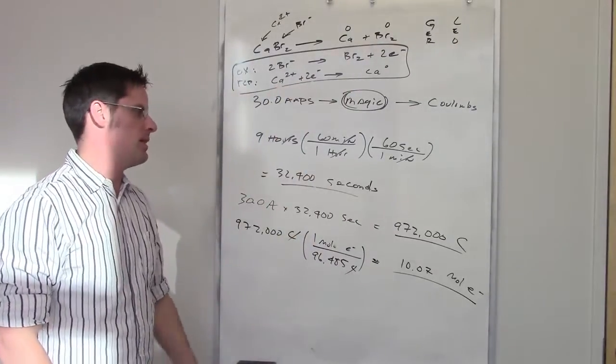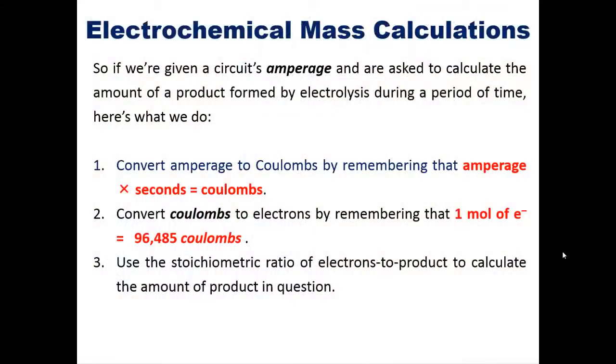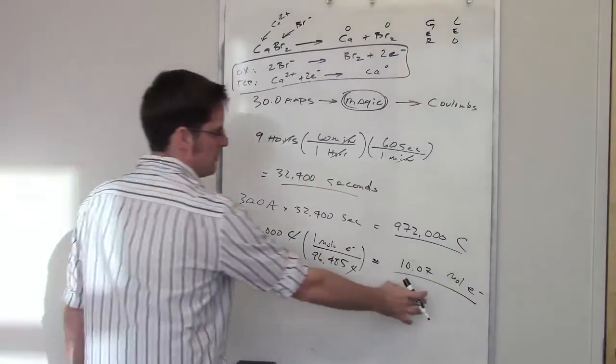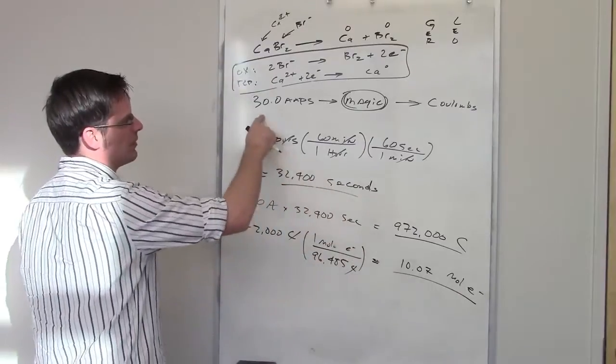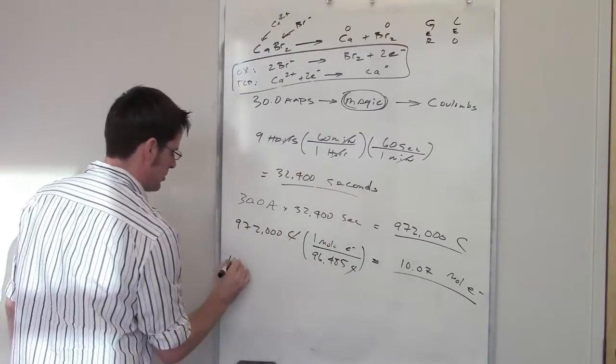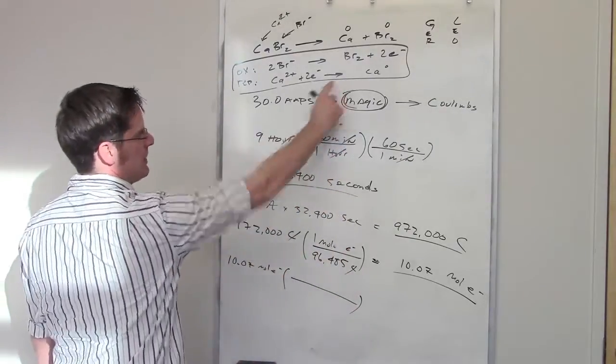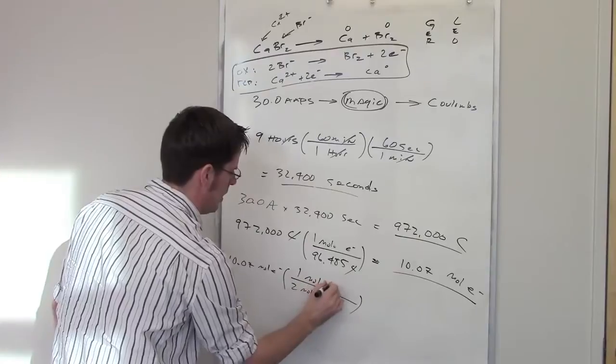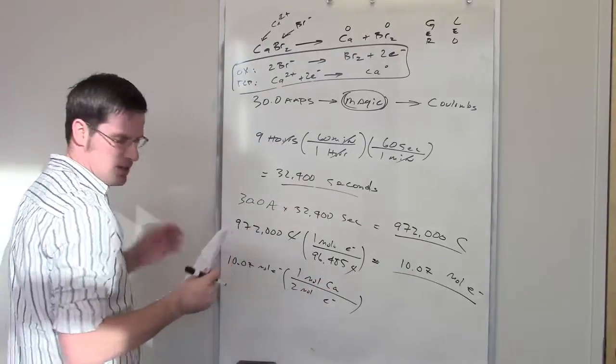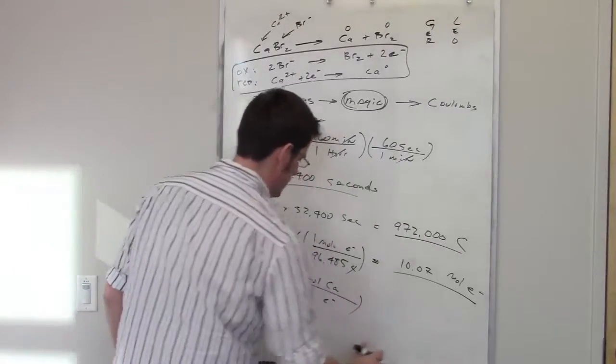This is a two-electron process. So that takes me once again to step three, which says use the stoichiometric ratio of electrons to product to calculate the amount of product in question. So we've determined from before that this is 10.07 moles of electrons. That's how many moles of electrons have been spat into this thing when we ran 30 amps for nine hours. So I'm going to write down 10.07 moles of electrons right here. And now I'll note from the stoichiometry up here that I have two moles of electrons for every one mole of calcium. And I'm focusing on the calcium because the question asked me about calcium. It asked how many grams of calcium metal are being produced in this process.